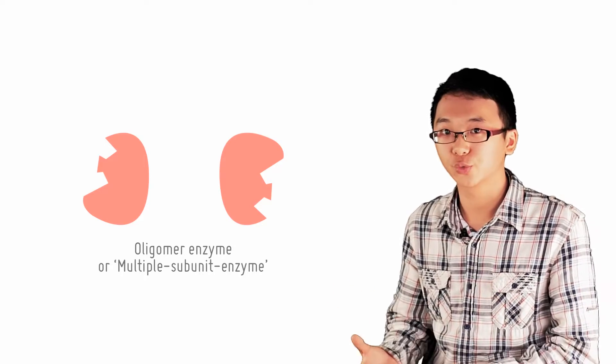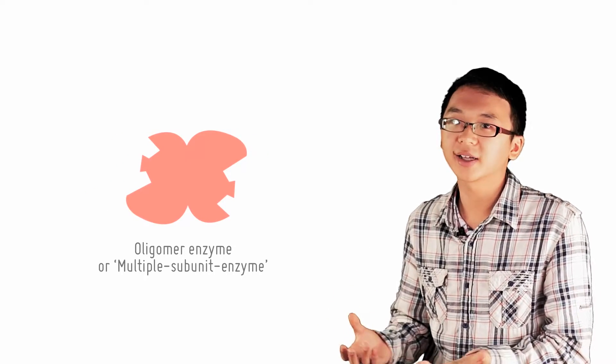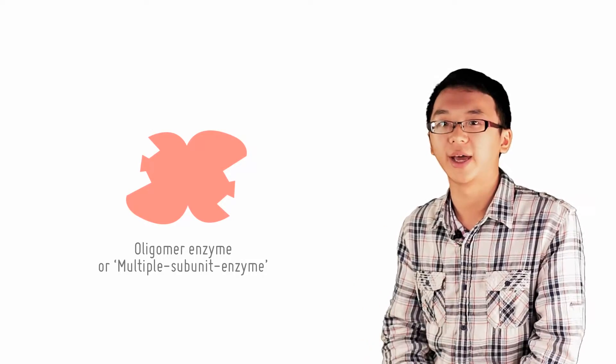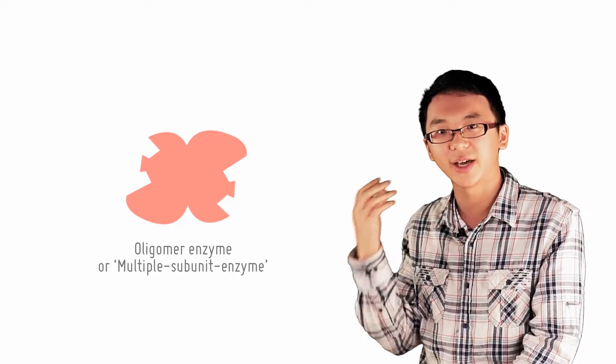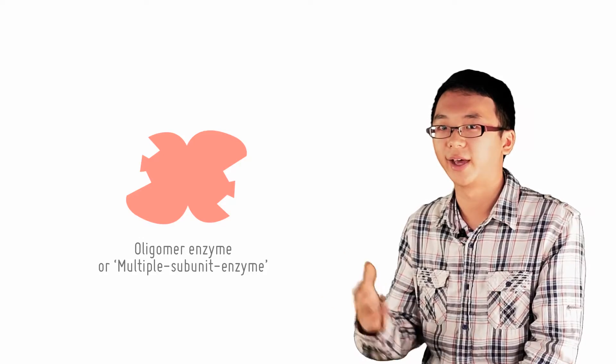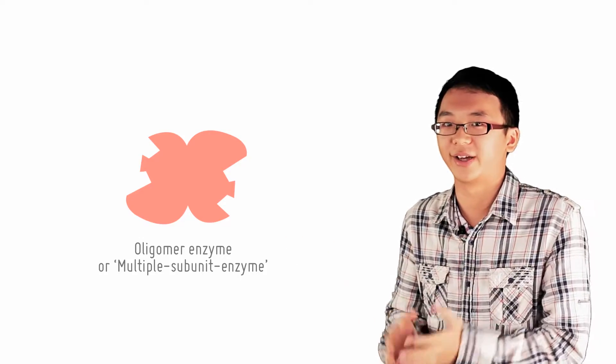Some enzymes consist of two or more subunits. In the past, it was thought that only oligomer enzymes or multiple-subunit enzymes could be allosterically regulated, and then we coined the term allosteric enzymes.